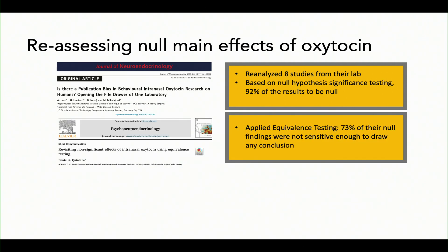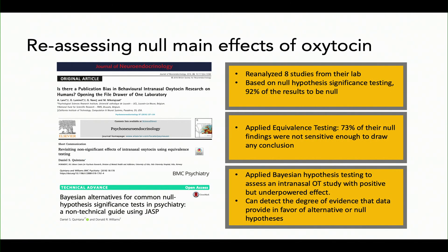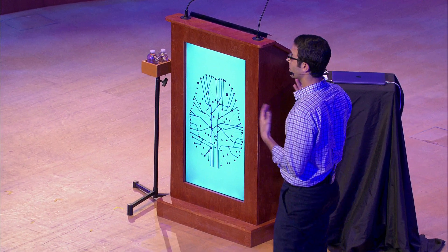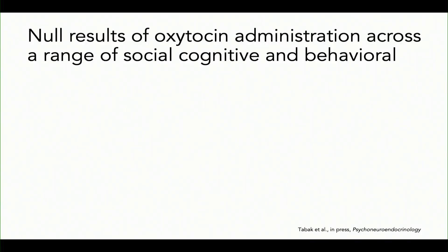Then Dan had a really great paper where he reassessed that reassessment. He applied equivalence testing to those results and actually showed that 73% of those null results weren't sensitive enough to detect the null result. It doesn't mean they weren't null findings — it just means we aren't totally sure. They didn't have the sensitivity or power. Dan also came out with another paper demonstrating a Bayesian hypothesis testing approach to determine the degree of evidence in favor of the null or alternative hypothesis.